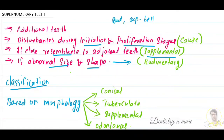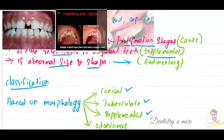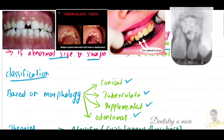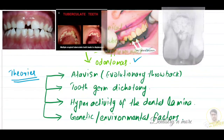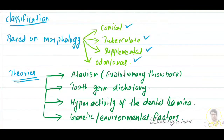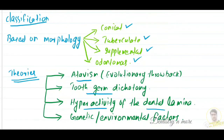Based on morphology, supernumerary teeth are of four types: conical, tuberculate, supplemental, and odontome. There are also four theories of supernumerary teeth formation: first, atavism or the evolutionary throwback; second, tooth germ dichotomy; third, hyperactivity of the dental lamina; and fourth, genetic and environmental factors.